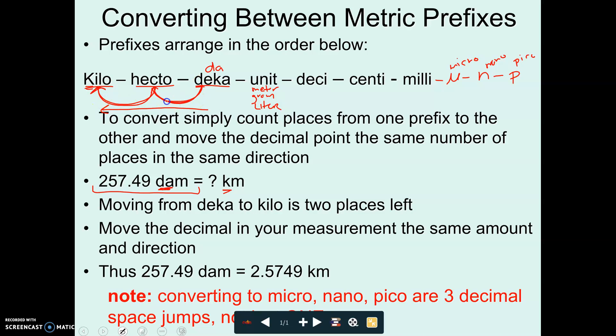I'm going to move my decimal to the left. How many spaces to the left am I going to go? I'm going to count how many jumps to get to kilo. Be careful on this. It's not how many words are there. It's counting how many jumps would I have to move. I would have to move the decimal one, two jumps to the left. To go from decameters to kilometers, I would move my decimal one, two jumps to the left. My answer would be 2.5749 kilometers. Two to the left.